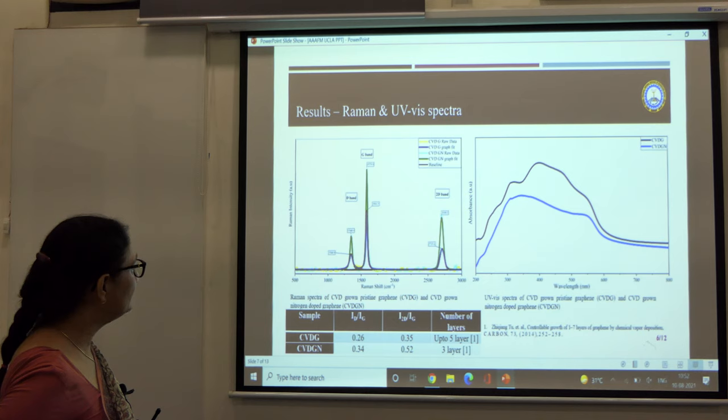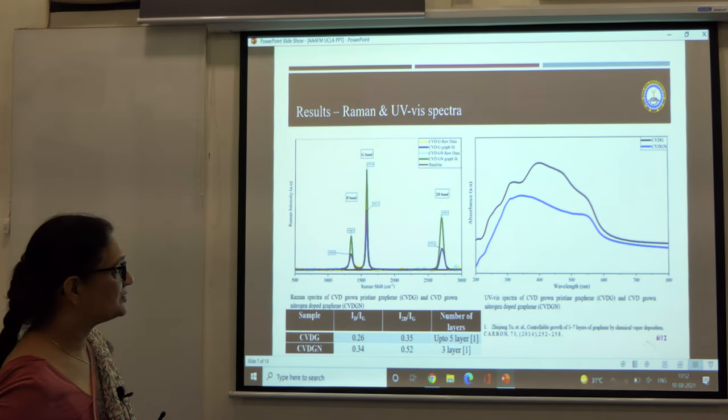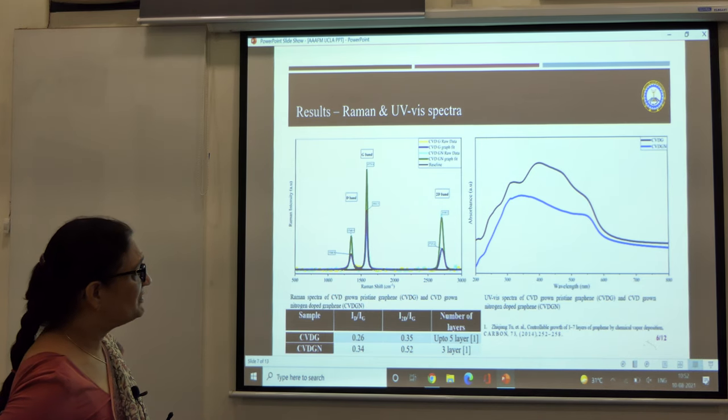For the nitrogen doped graphene it was three layers. And this is the UV visible spectra of these two graphene samples.